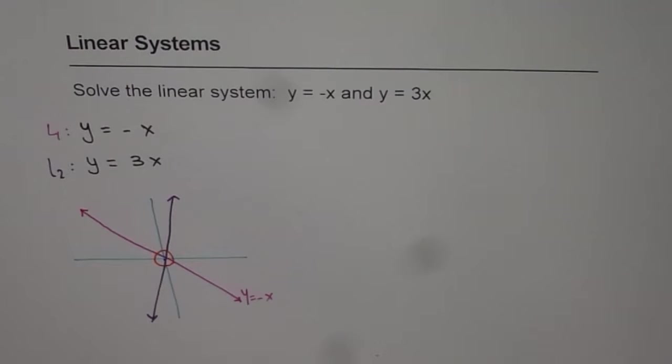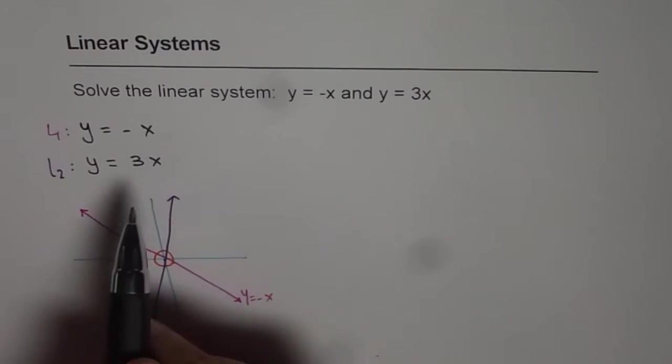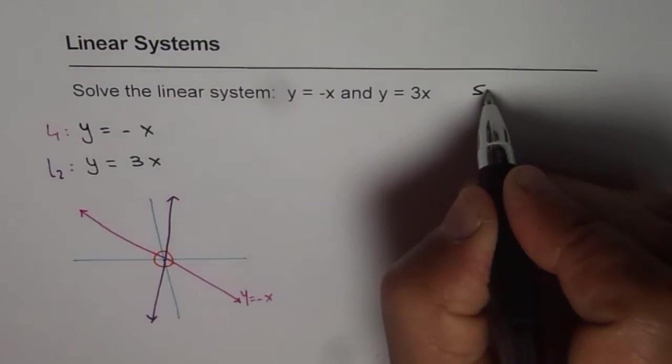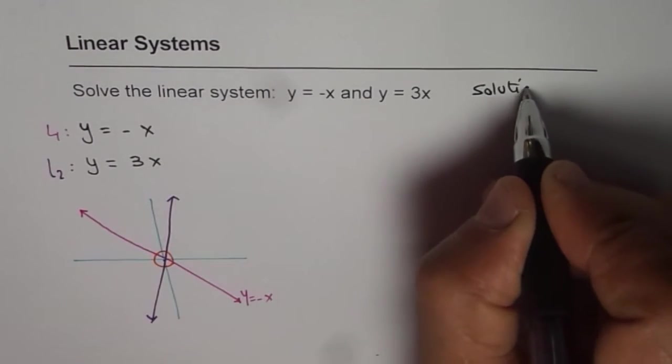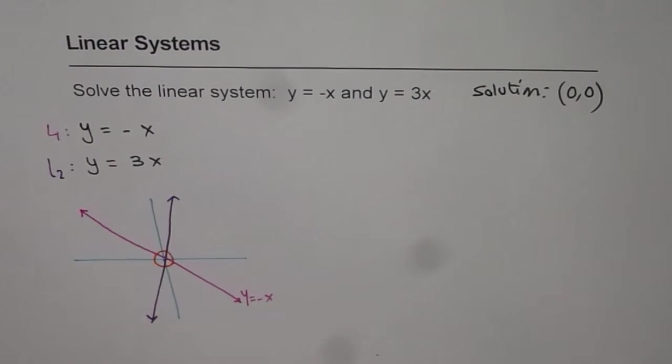They intersect at origin and so we can write solution is the origin itself which is (0,0). So that is one way of solving this.